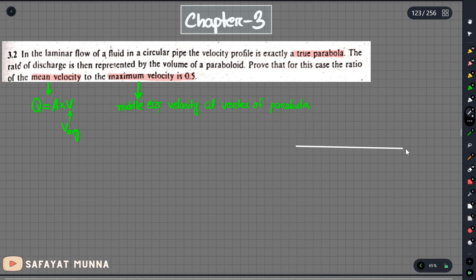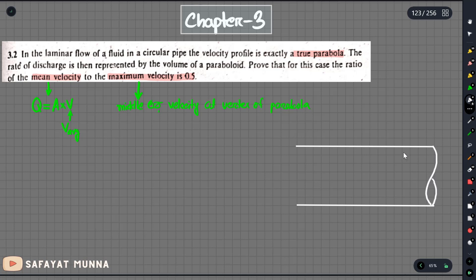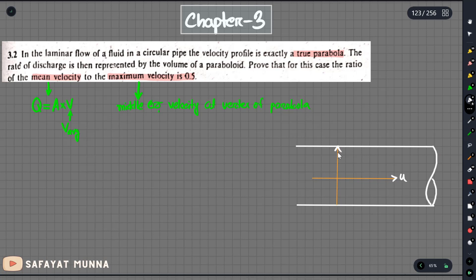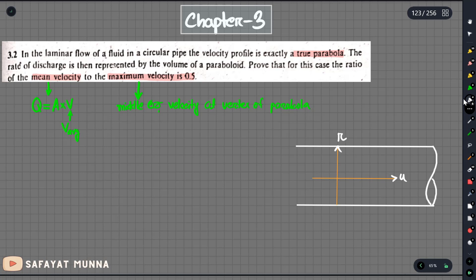Let's set up the pipe. The velocity profiler is called the velocity profile. Let's set up the axis variables. This is the axis. Let's try the velocity direction. This is the center. We need to denote the radius. If we look at the velocity profile, the parabolic shape is symmetric about the axis.